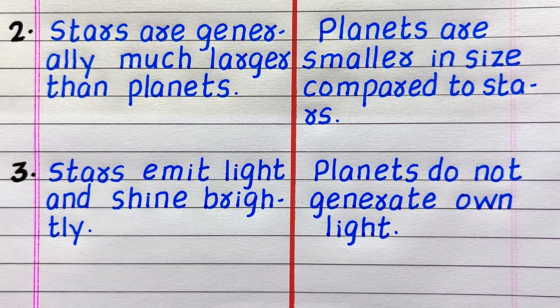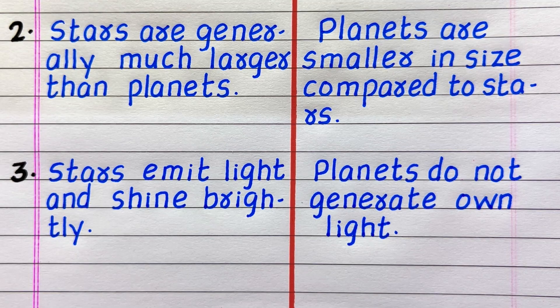Planets are smaller in size compared to stars. Third: stars emit light and shine brightly, while planets do not generate their own light.